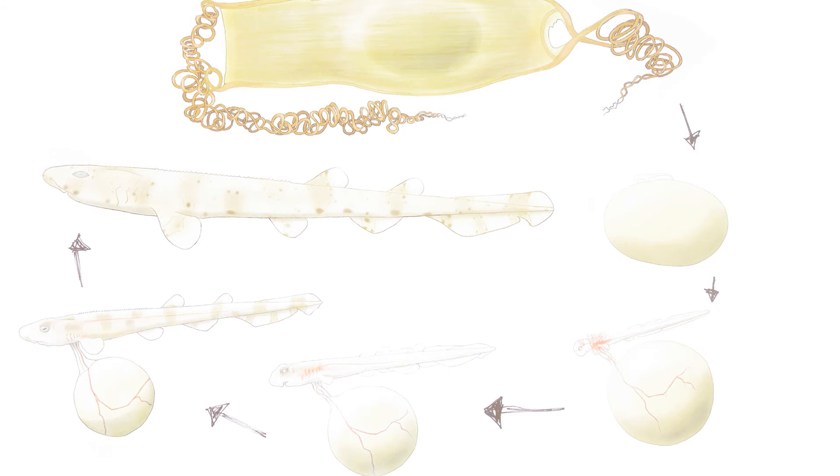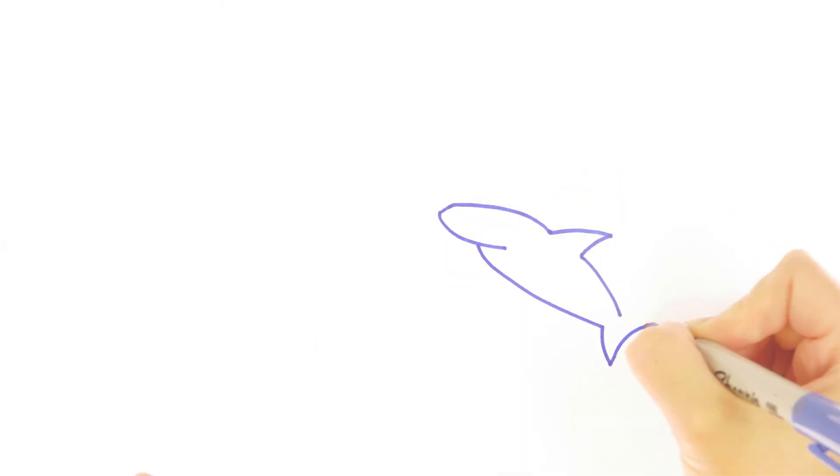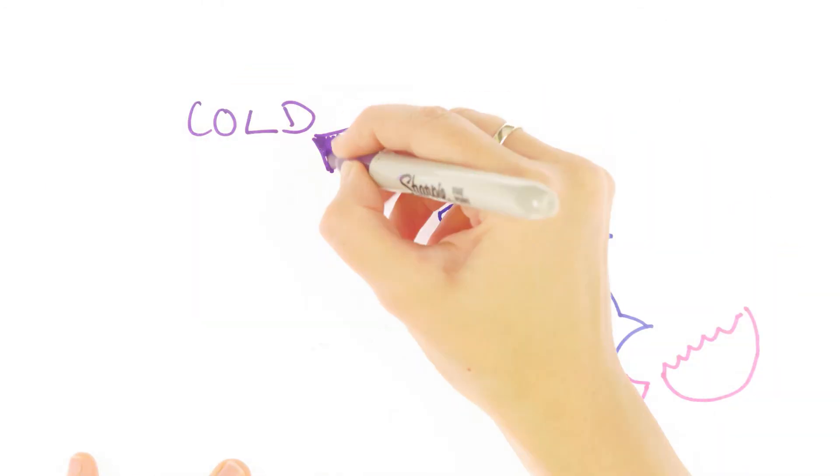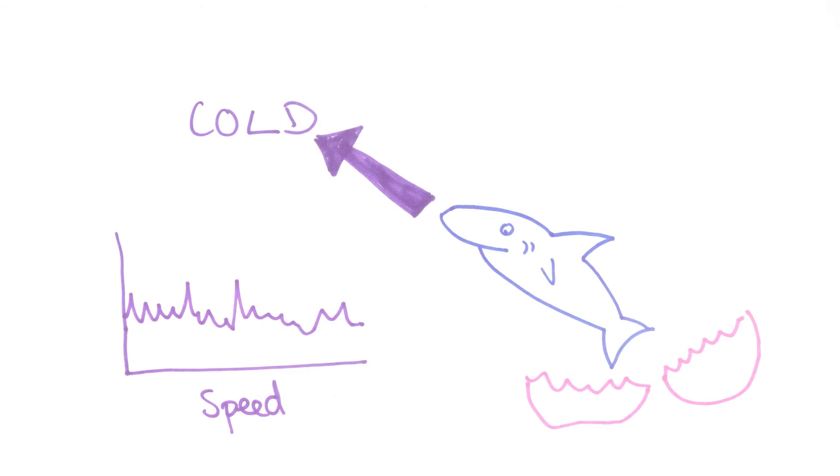To do this, we have produced our own shark embryonic developmental scale, which helps us to track the effect of climate on developmental stages. Once hatched, we then study the shark's swimming ability and their metabolic rate.